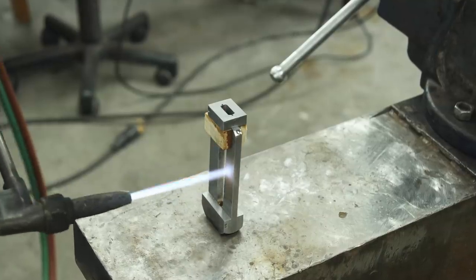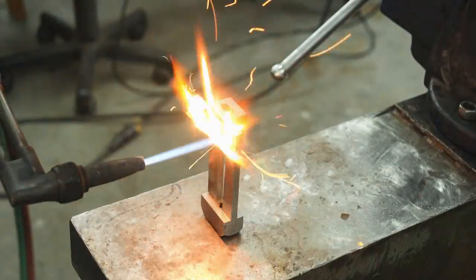To remove the CA glue, all I need to do is heat the parts up with the torch and it should burn all the CA glue off.